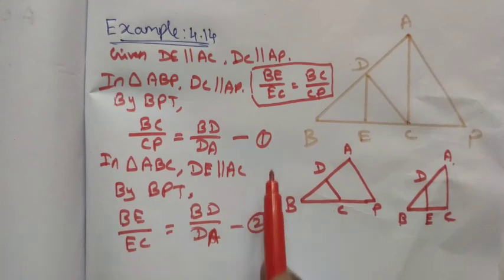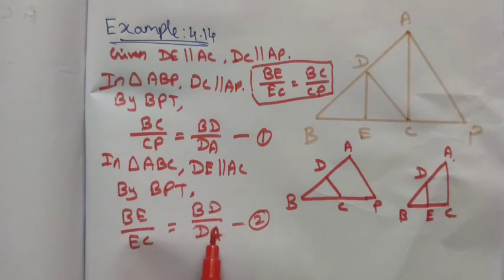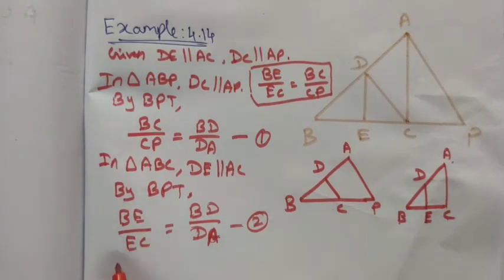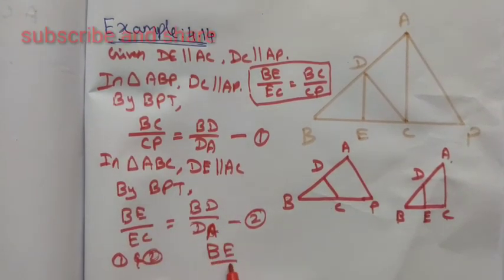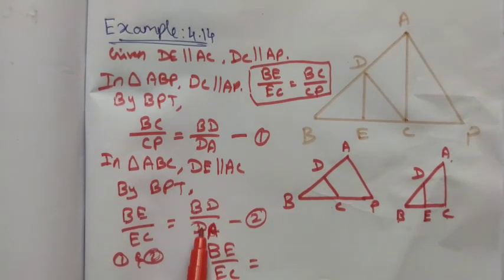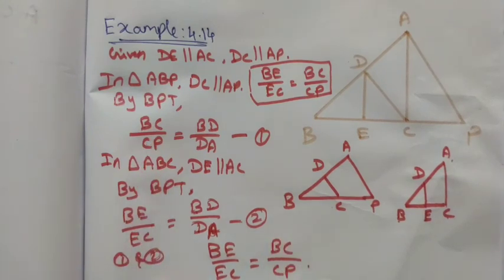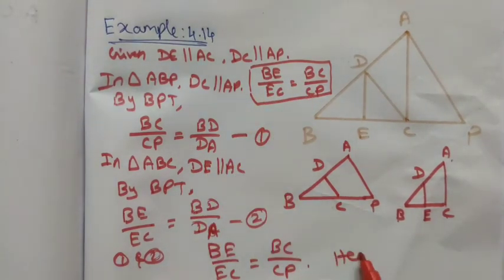By using the first and second equations — in equation 1 we have BD divided by DA, and in equation 2 we also have BD divided by DA. From equations 1 and 2, we can write: BE divided by EC is equal to BC divided by CP. This is exactly what we wanted to prove. Hence proved.